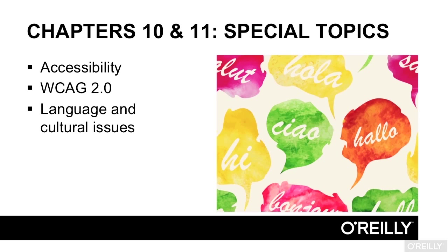We'll finish up our course by talking about accessibility and internationalization. In addition to providing an overview of the principles of accessibility, we'll spend some time in Chapter 10 digging into WCAG 2.0, the International Guidelines for Creating Accessible Products. In Chapter 11, we'll dig into some of the language and cultural issues we must consider when building products for a global audience.